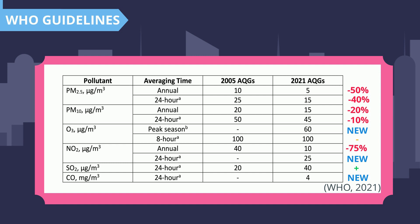When comparing the guidelines from 2005 to 2021, we can see the percent change of these emission limits. For PM2.5, the annual emission limit decreased by 50%, and for the 24-hour limit, it decreased by 40%. For PM10, the percent change is not as high since they pose less of a threat to our respiratory and cardiac systems, but it did decrease by 20% annually and 10% for the 24-hour limit. As for ozone, a new peak season limit was added due to visible trends in certain seasons. Nitrogen's annual emission limit decreased by 75%, and a new 24-hour limit was added.